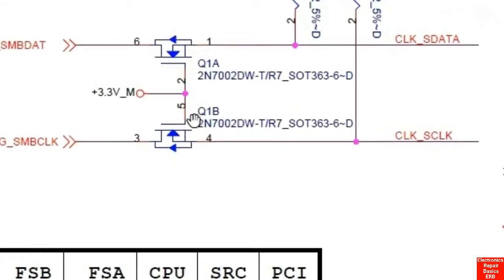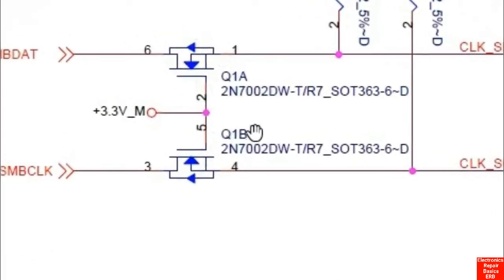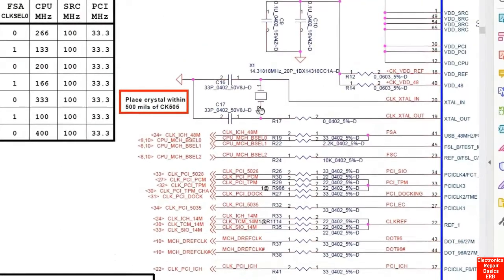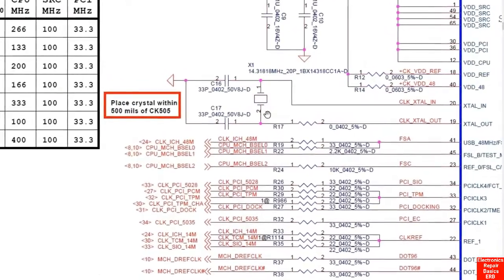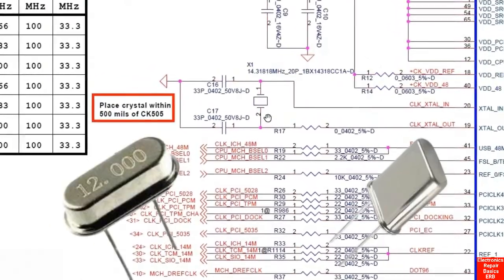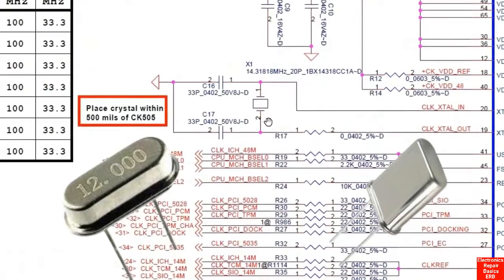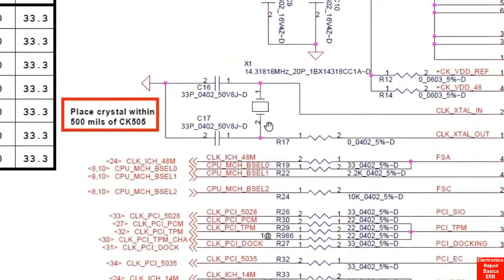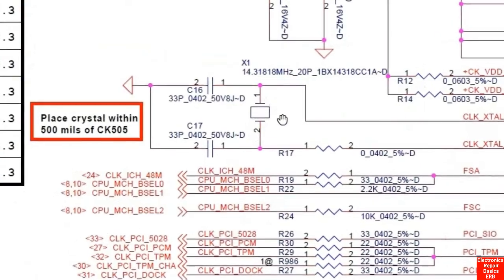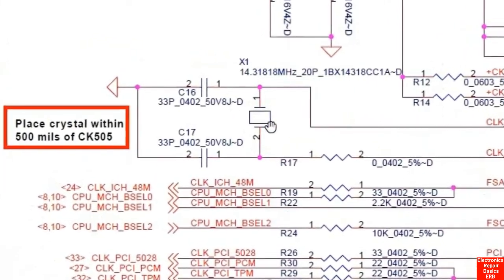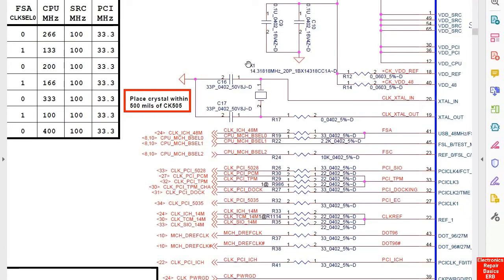For a transistor we have base, collector, and emitter, while for a MOSFET we have gate, drain, and source. Here we have the crystal oscillator — the quartz or crystal oscillator. It has two terminals, and its reference on motherboards is X or Y. For example, you will see X1, so you'll find X or Y for the crystal oscillator.